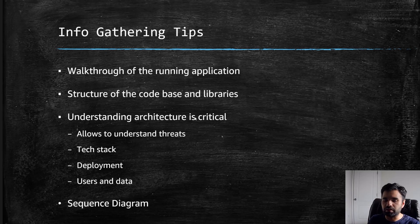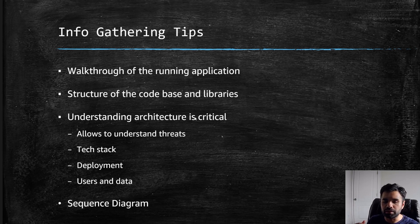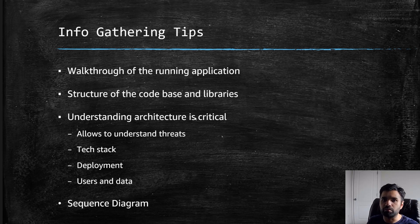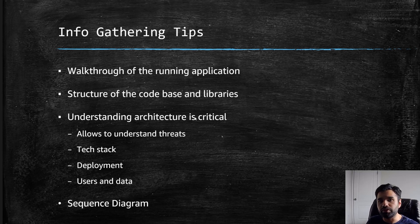For information gathering, you can sign up or ask someone for test credentials and walk through the application yourself — this gives you a lot of information. Read through the product documentation, then download the source code and see how the code base, structure, and libraries are organized. Sit with the architect to understand trust boundaries, which components use which libraries, the tech stack, and how deployment works — whether pre-commit or post-commit fits their sprint and agile methodology. Also review users and data stored in different components. If they have sequence diagrams for critical use cases, ask for those — they'll help immensely in understanding how each component is used.